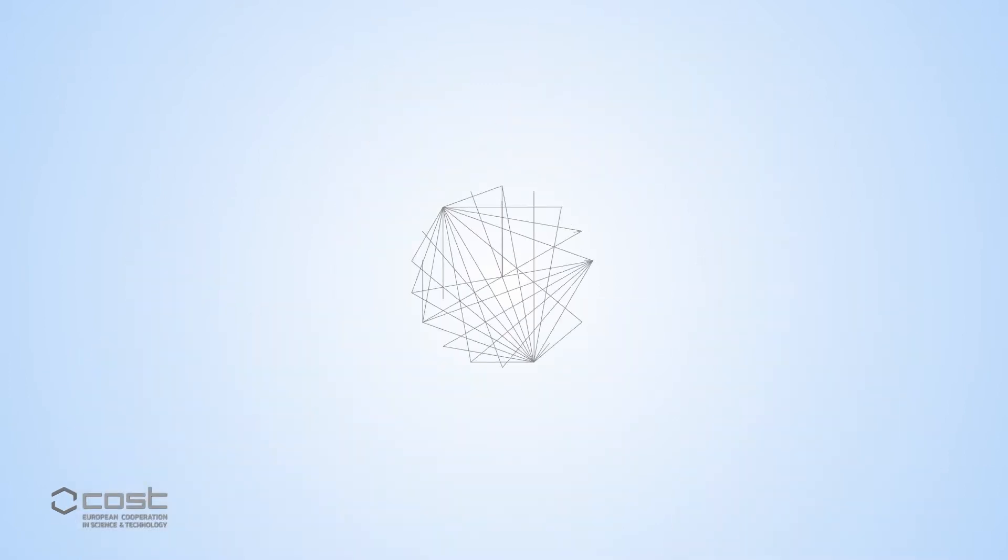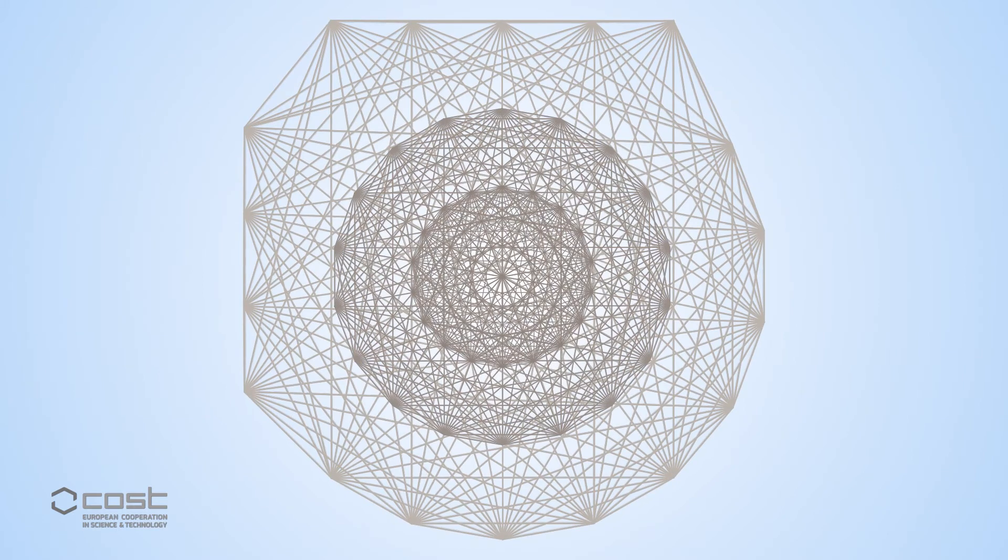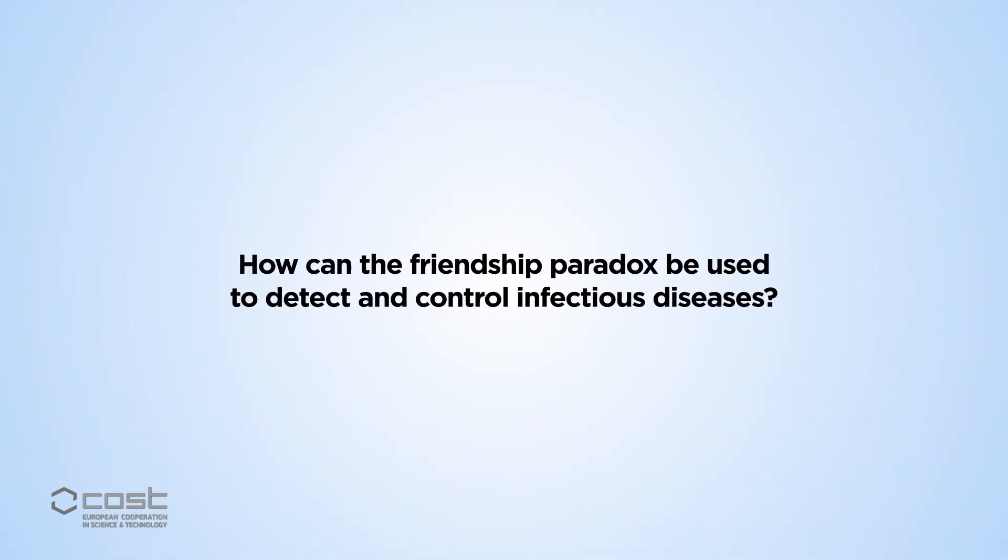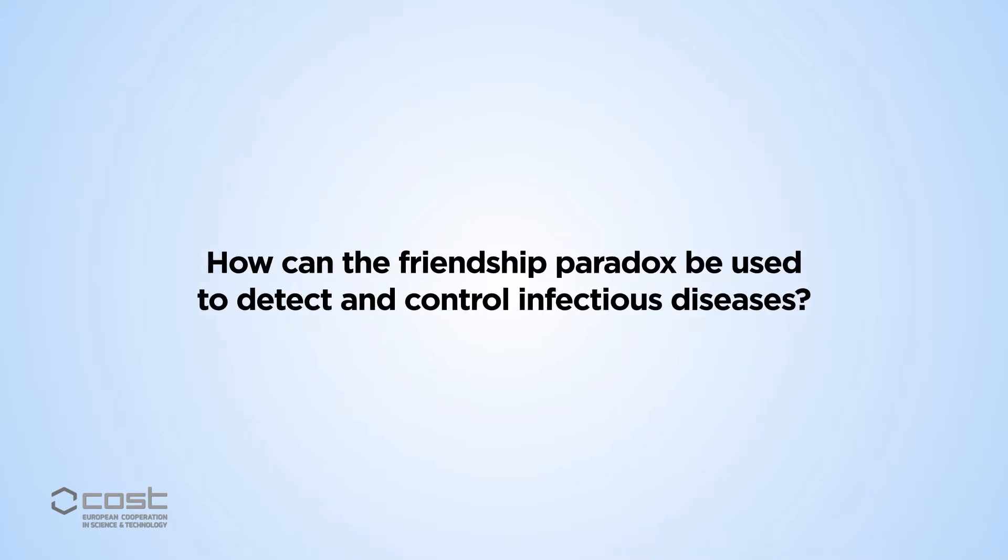In network science, things are often not as they seem, and in this video we explore the friendship paradox and how it can be used to detect and control infectious diseases.